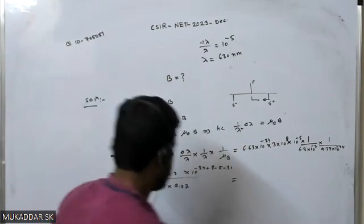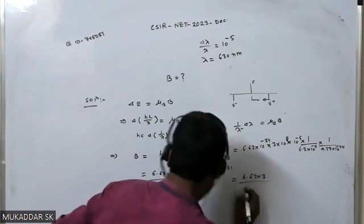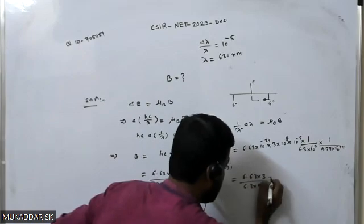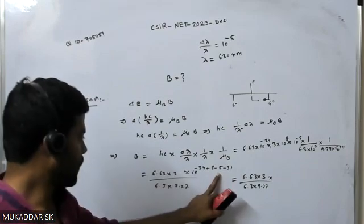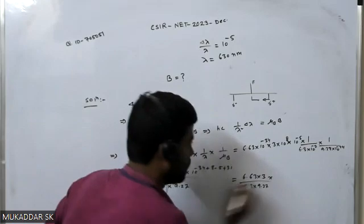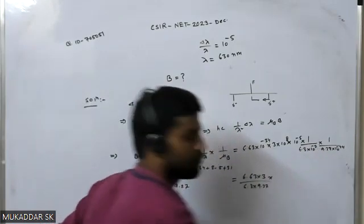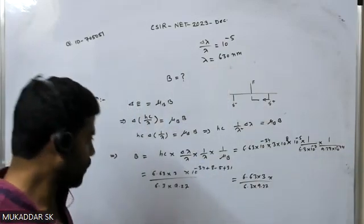And then plus 8 minus 5, and if you see this, so minus 7 minus 24, that will be minus 31. So it means 6.63 into 3 divided by 6.3 into 9.27, and then for if you see minus 34 plus 8 minus 5, that's minus 31.